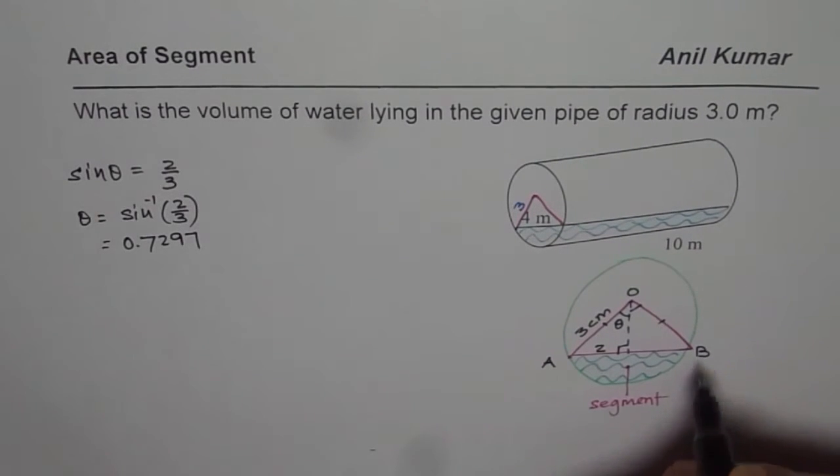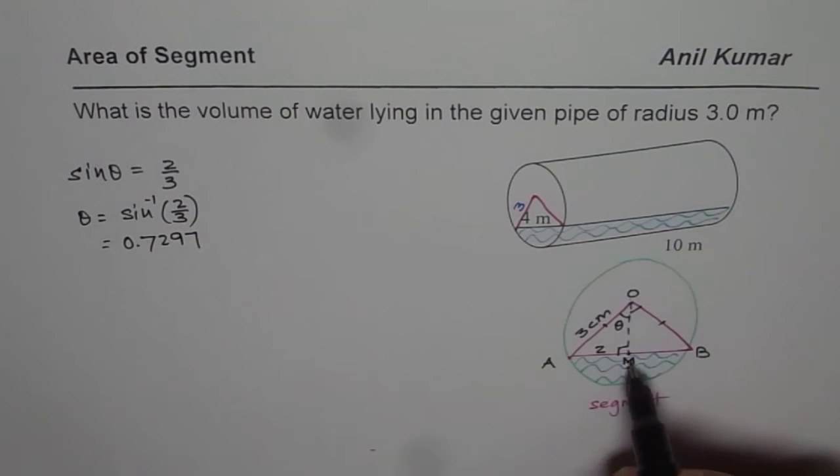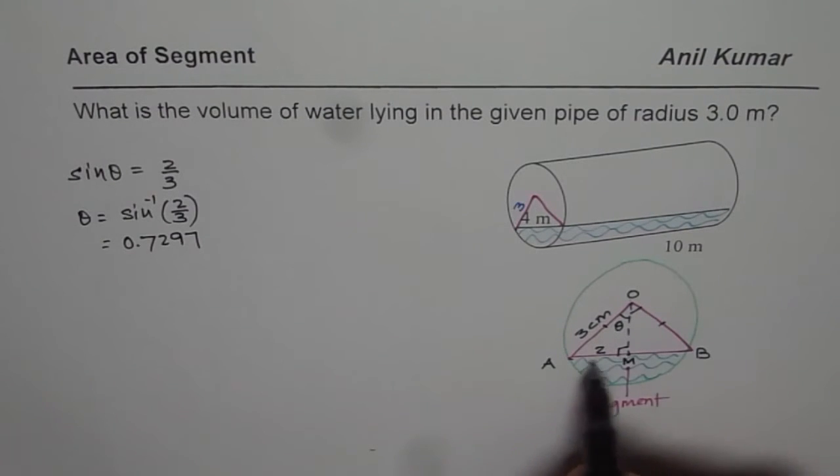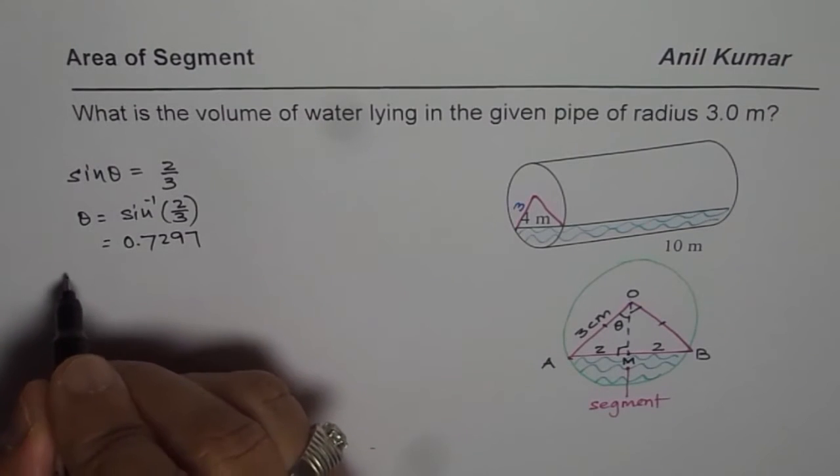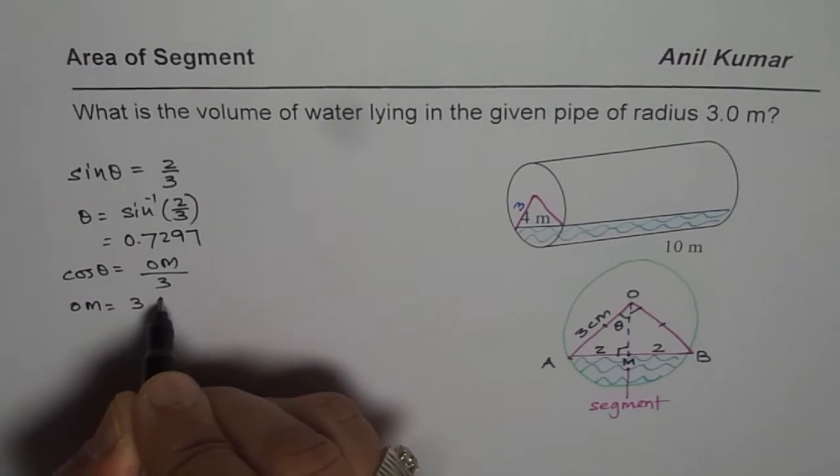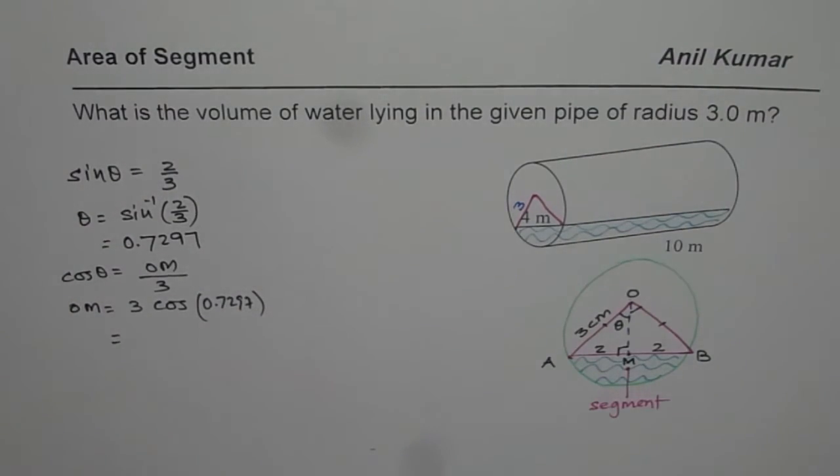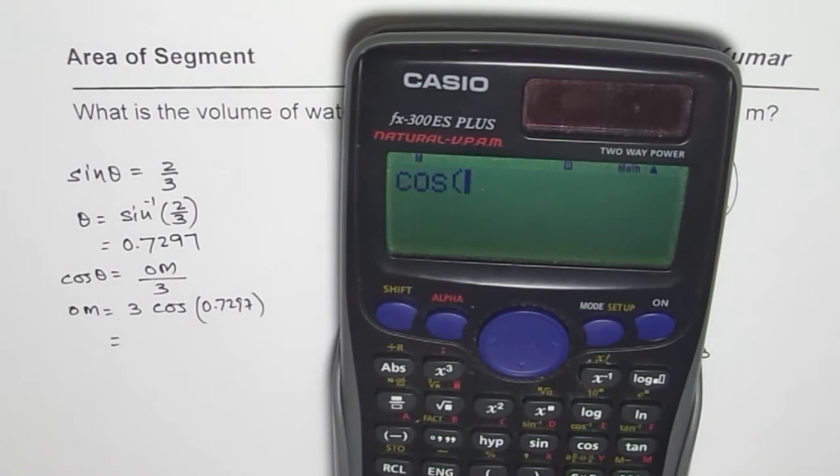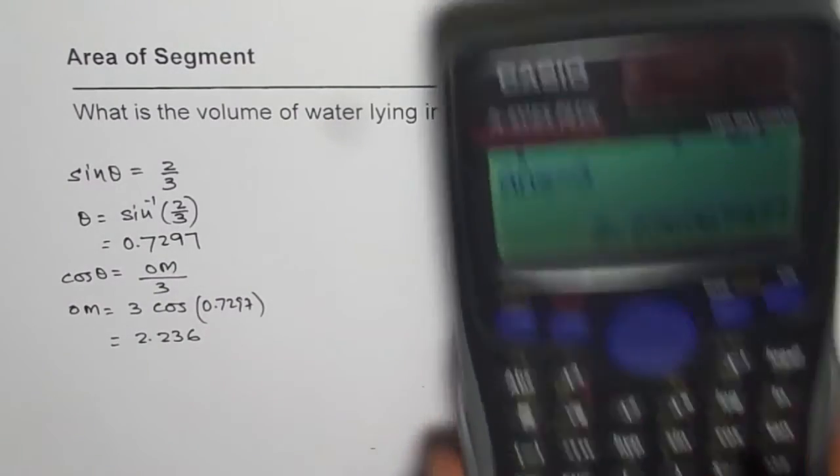So we found the angle. So this is center O, let me call this point A and B, let me call this midpoint as M. So in that case what is OM? We need to find the height. We know the base of the triangle which is four, 2 plus 2. So OM we can find now. We know the angle using cosine. So we have cos theta equals OM over 3, or OM equals 3 times cos of this angle which is 0.7297. So let's calculate OM. We already have the angle, we'll say cos of the answer and multiply that by 3, so we get 2.236.